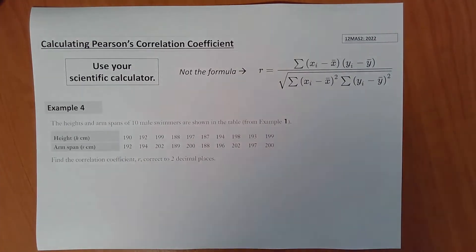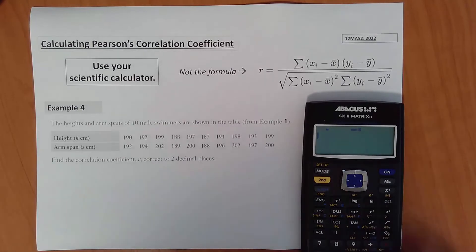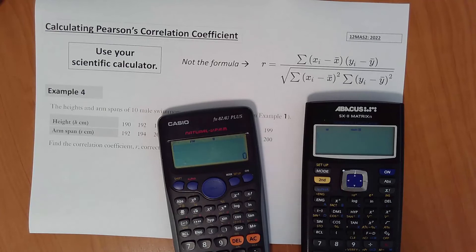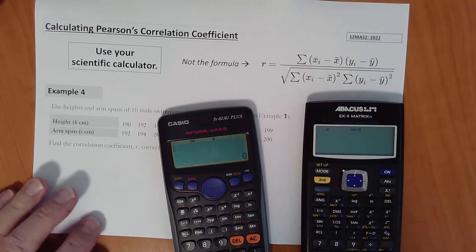If you have one of the modern VPAM calculators, in this case I'm going to use our Abacus SX2 matrix N calculator. However, the process is exactly the same if you've got some variation of the Casio FX82 AU plus calculators, FX82 100, etc. They all work in very much the same way.